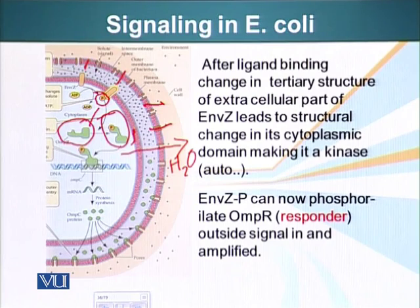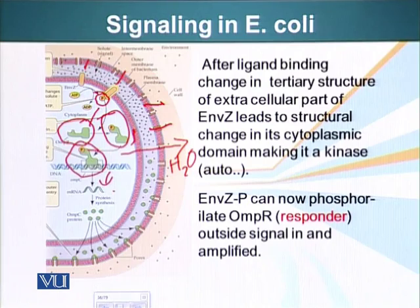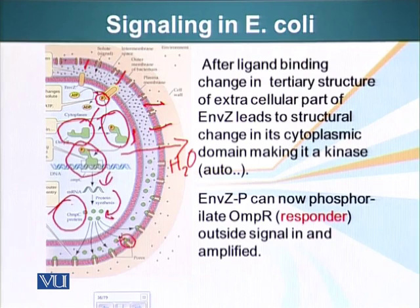When that happens, OMP-R acts as a transcription factor and recruits RNA polymerase. RNA polymerase will form messenger RNA, which will be translated into a protein — in this case, we call the protein OMP-C. OMP-C will be exported into the intramembranous space, and it finds these pores and plugs them. So no new solute molecules can enter the intramembranous space, changing the osmolarity of the fluid there.